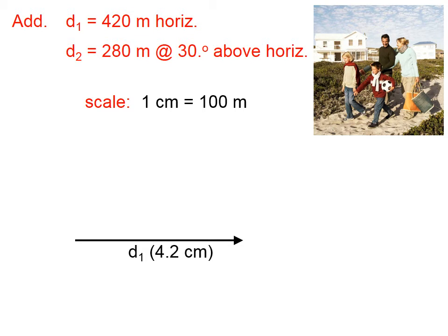Then we draw subsequent vectors tip to tail. In other words, wherever we ended the first vector, that's where we need to start the second vector. So this dashed line represents horizontal, and this line represents 30 degrees above horizontal. And using our scale, that vector will have a length of 2.8 centimeters, because the distance in the problem is 280 meters.